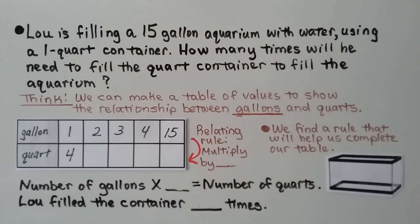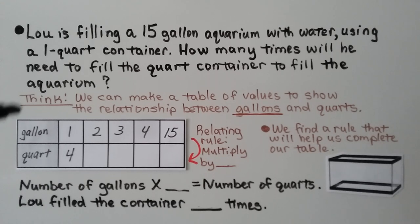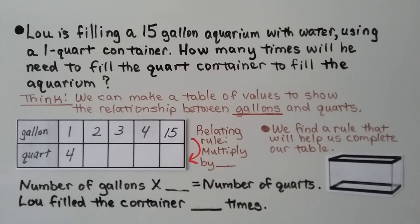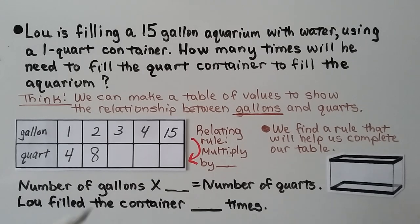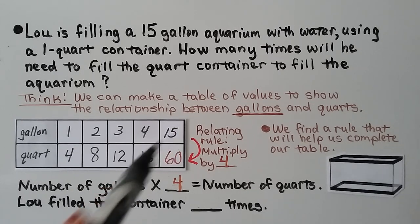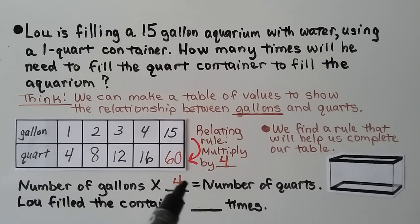Lou is filling a fifteen-gallon aquarium with water using a one-quart container. How many times will he need to fill the quart container? We make a table of values to show the relationship between gallons and quarts. One gallon is four quarts, so the conversion factor is four — multiply by four. Two gallons is eight quarts, three gallons is twelve, four gallons is sixteen. For fifteen gallons: fifteen times four equals sixty quarts. So Lou filled the container sixty times.